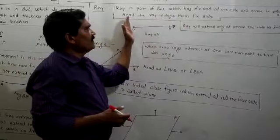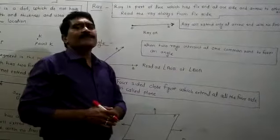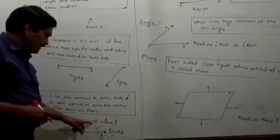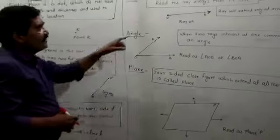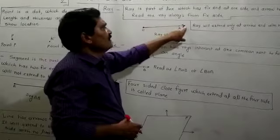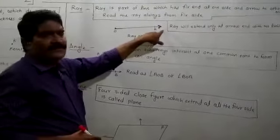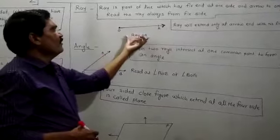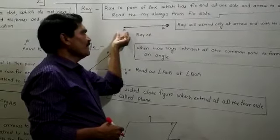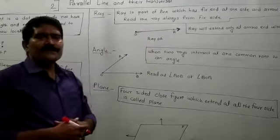The fixed end of the ray will not increase, but continuously the ray will increase at the arrow end — just like a line extends to both sides, a ray extends only to one side. If you want to read a ray, you must always read it starting with the fixed end. You will read it as 'ray OA' — not 'ray AO.' Always read the ray with the fixed end first.